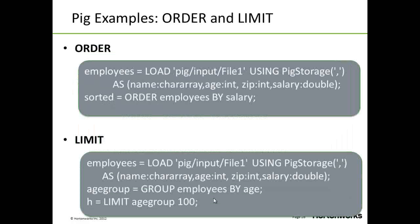The PIG Latin language is rich with keywords. Here we show two examples: order and limit. We create a relation called employees by loading pigInputFile1, using the comma as the token separator, with each tuple containing name, age, zip, and salary. We order the relation employees by the salary field, creating a new relation called sorted. The limit keyword allows us to limit the number of tuples that will be found in our final relation.